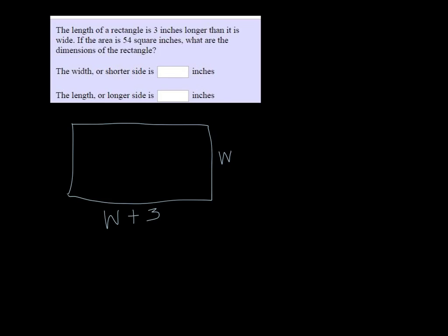And the area is 54. Area is length times width. So that gives us our equation. We get w times w plus three equals 54.